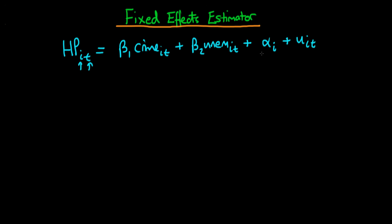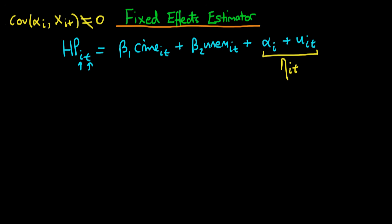Just to be clear, the problem we had before is that this whole term — the unobserved heterogeneity and the idiosyncratic error — is what we actually saw as our composite error v_it. The problem which this unobserved heterogeneity posed was that there was some covariance between the unobserved heterogeneity and one or more of our explanatory variables which wasn't equal to zero. Because of that, it was a violation of the assumption required for least squares estimates to be consistent, giving us endogeneity.